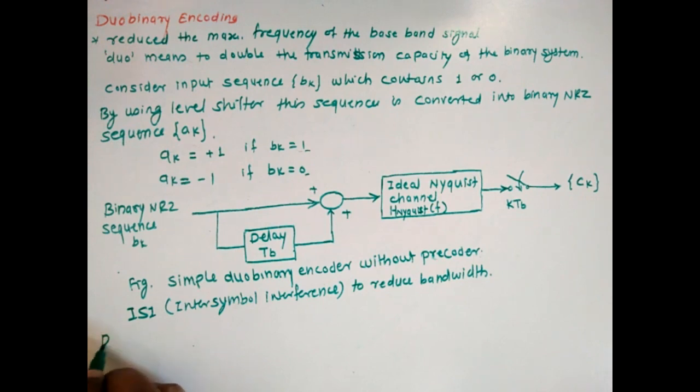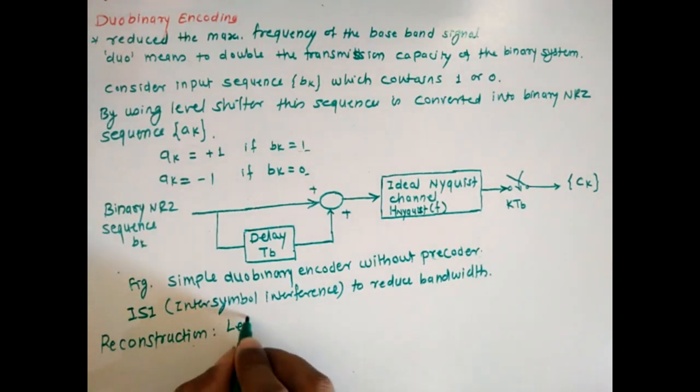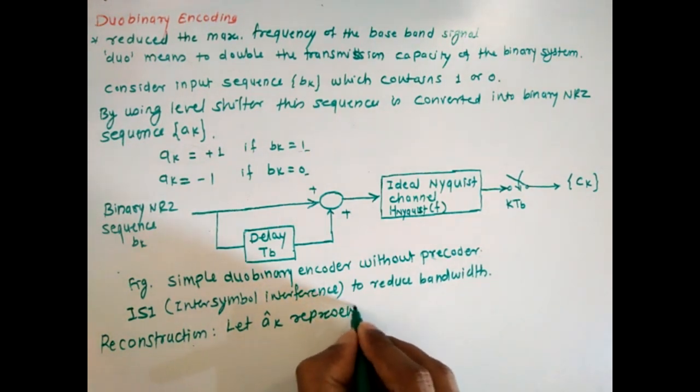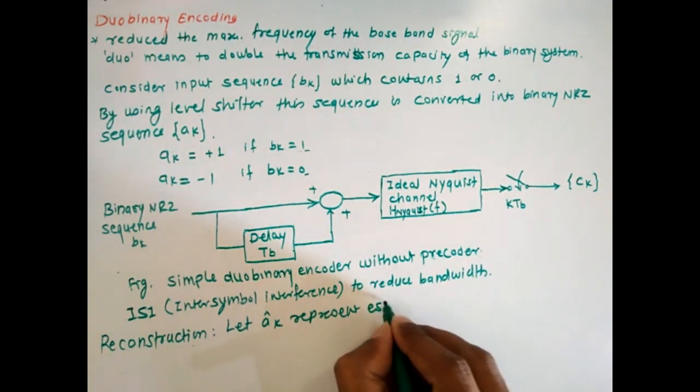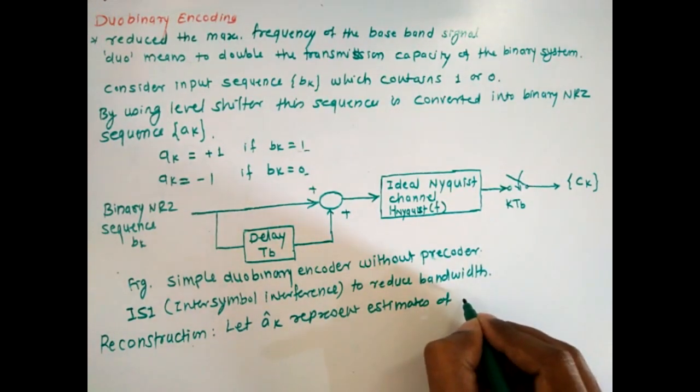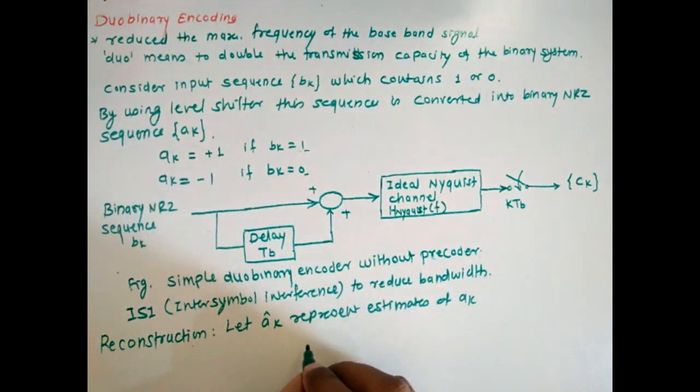How to reconstruct the duo binary coding? Let ak bar represent estimates of ak. Then we can obtain ak bar as ck minus ak minus 1 bar.